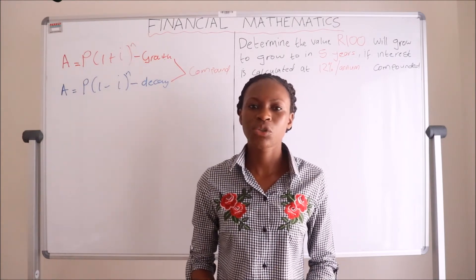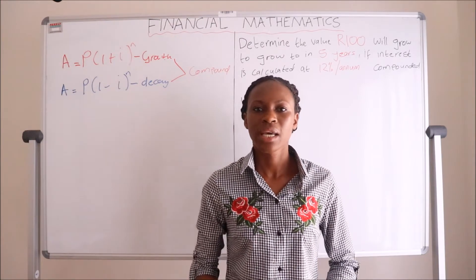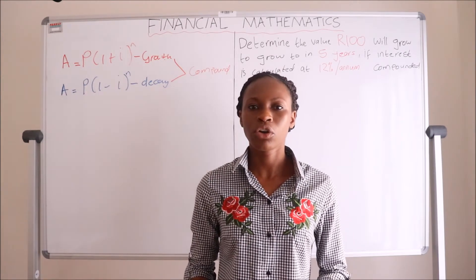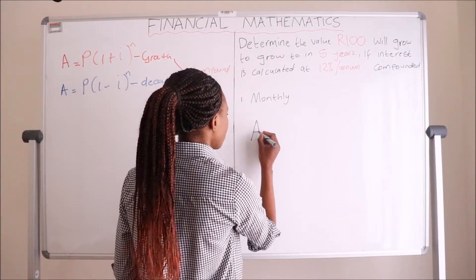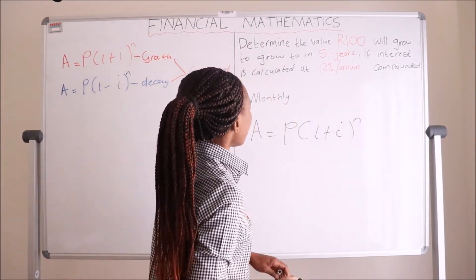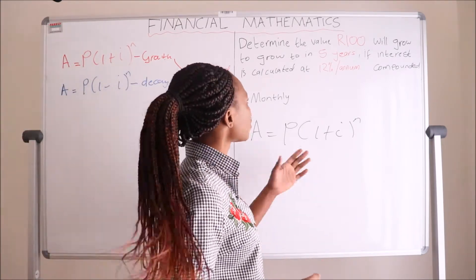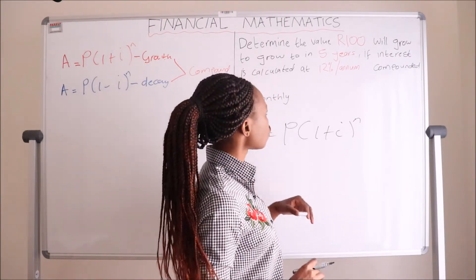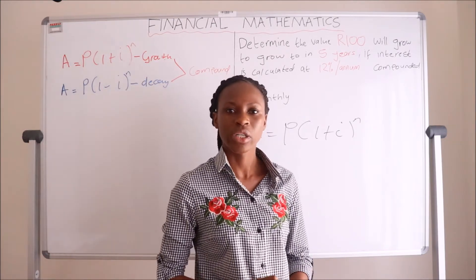That means we have to consider that it won't be compounded just once, and also in the period of five years, it will be compounded more than just five times. We still use the same equation: A equals P times one plus i to the exponent of n. We use the growth equation and not the decay one because they didn't mention that the 100 rand will be depreciating — we assume the value is appreciating with a 12% increase per annum.